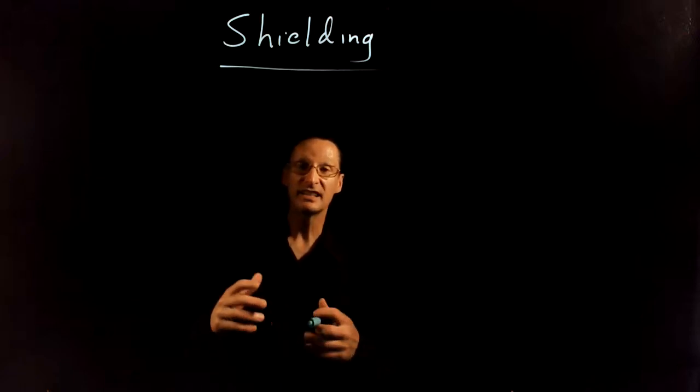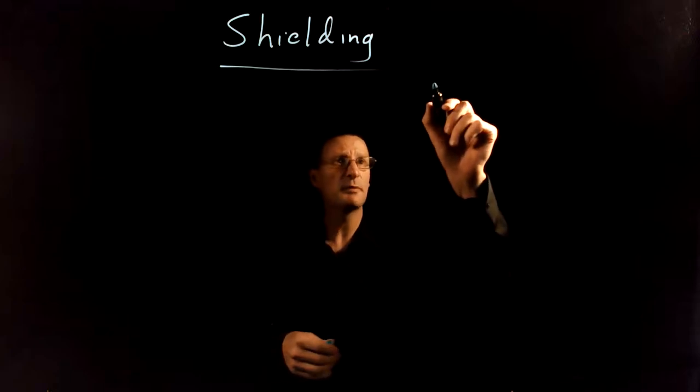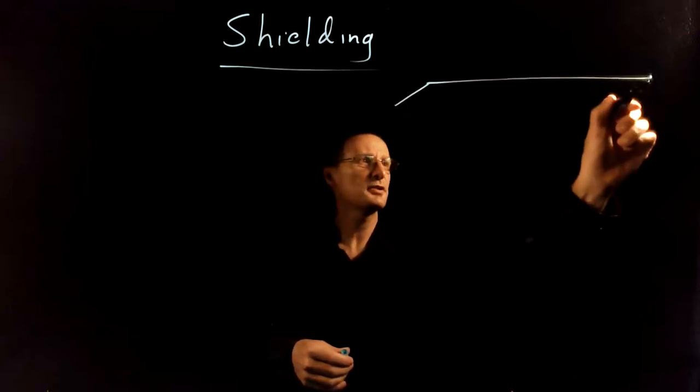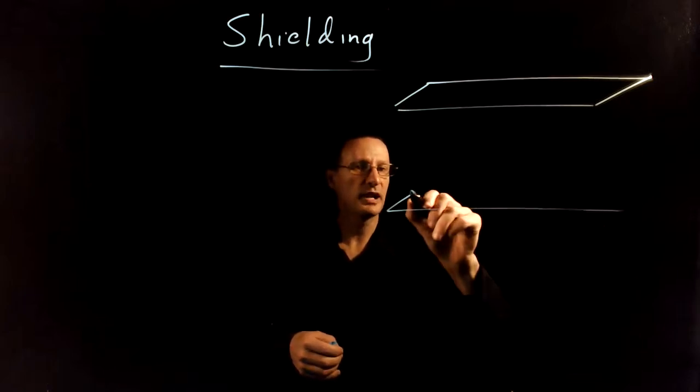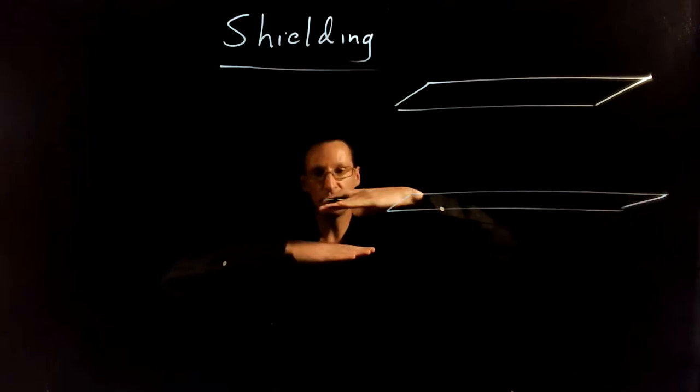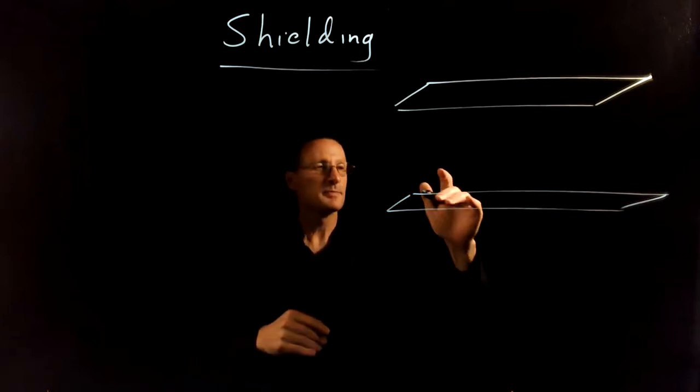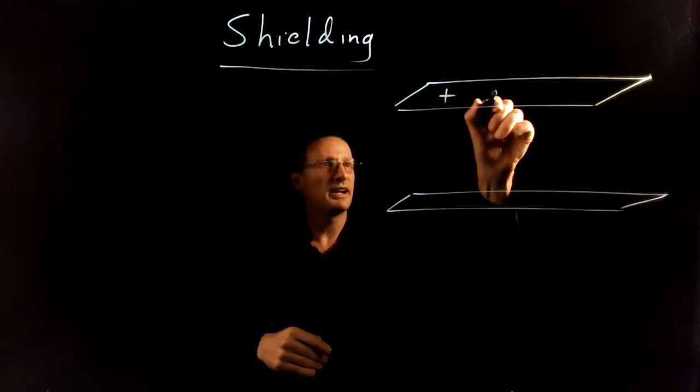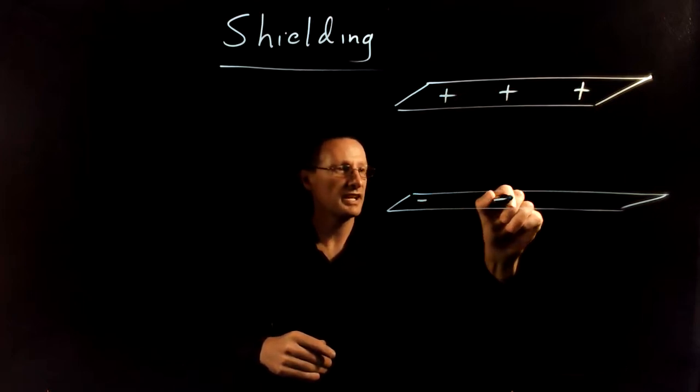Hey there, awesome physics students. Let's talk about shielding electric fields. The example I want to start with is imagine you have a parallel plate electric field. What I mean by that is you have two conductive plates arranged like this, and the top one is charged positively and the bottom one is charged negatively.